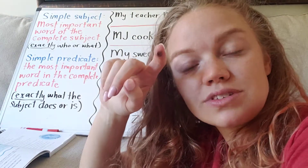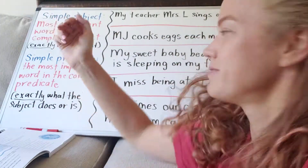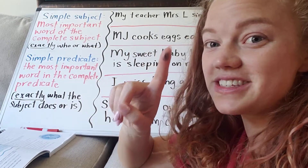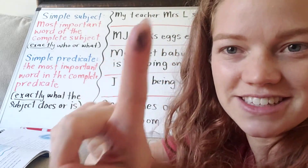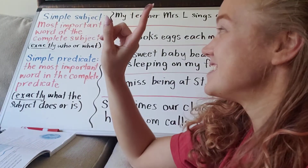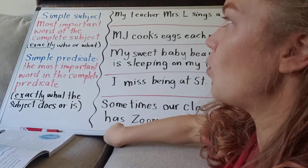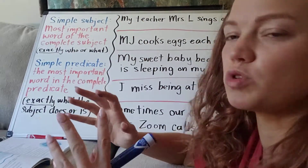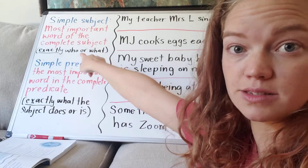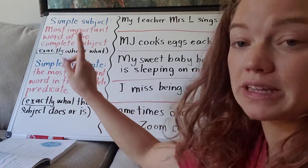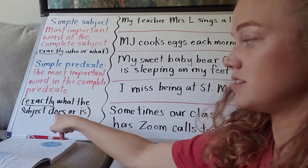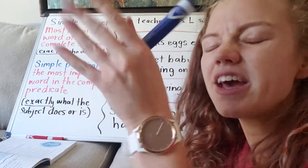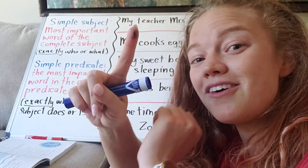Today we're going to be looking at the simple subject and the simple predicate. The simple subject is the most important word of the complete subject. This is not subjective — it's not something that you decide. You are looking at it and seeing what the main word is — exactly who or what the sentence is about. The simple predicate is the most important word of the complete predicate, exactly what the subject does or is. You're trying to get down to the itty-gritty: if you had to cut out all the extra parts, what are the two things you'd need — who it's about and what they're doing?